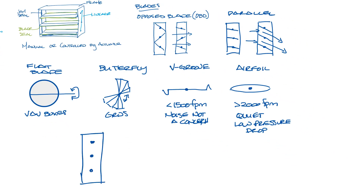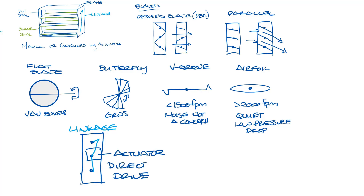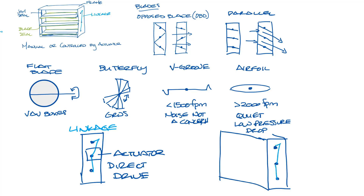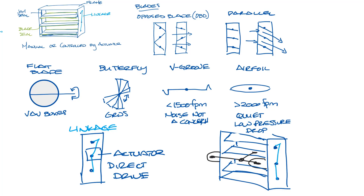The linkage connects the blades together. They're at the end of the damper frame and are driven by operating a single blade called the drive blade. You could mount the actuator right on the drive blade and now it's direct drive. You can also have what is called a jack shaft, which is offset from the damper itself. The jack shaft would connect to that blade and you would control it from the jack shaft, not directly from the end of the blade. In this case you would mount the actuator on the jack shaft to control the blades. This is commonly used when you have multiple sections of a damper connected together or when you want to internally mount the actuator.